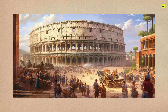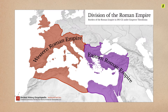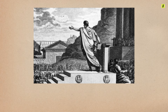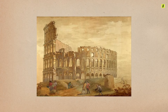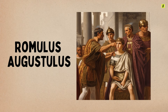Furthermore, the Roman Empire struggled with internal divisions. The empire was divided into the Western Roman Empire and the Eastern Roman Empire, later known as the Byzantine Empire, in 285 AD by Emperor Diocletian. While this division was intended to make governance more manageable, it also created two distinct political entities that often failed to cooperate effectively. The Western Roman Empire faced more significant challenges and ultimately fell in 476 AD when the last Roman emperor, Romulus Augustulus, was deposed by the Germanic chieftain Odoacer.